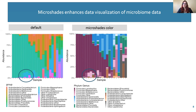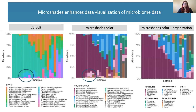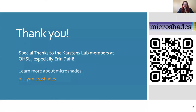This last plot uses the Microshades accessible color palettes and also the organization functions, so the layout of the data further improves visibility of trends. Microshades was also used to generate a custom legend that further shows the organization of the data.